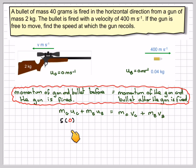So this is going to be 5 times 0 plus 0.04 times 0 is equal to 5 times v plus 0.04 times 400.